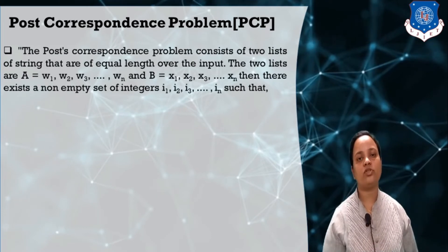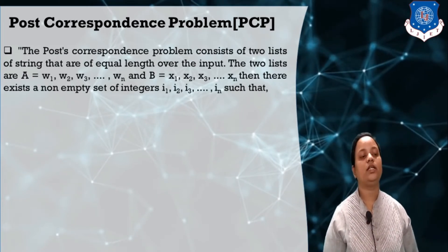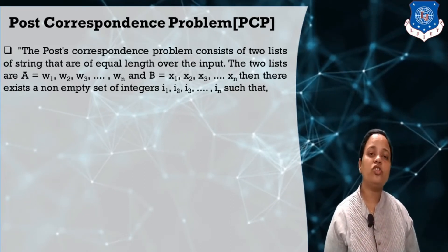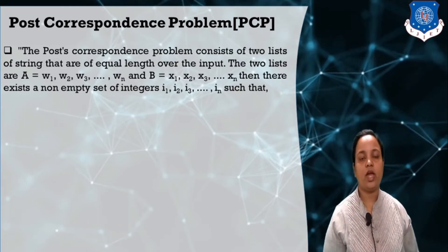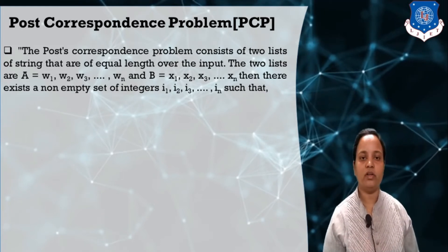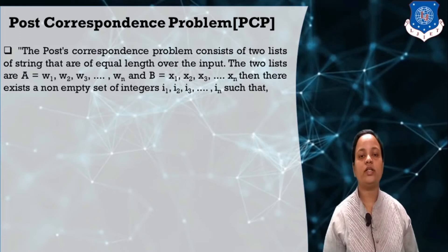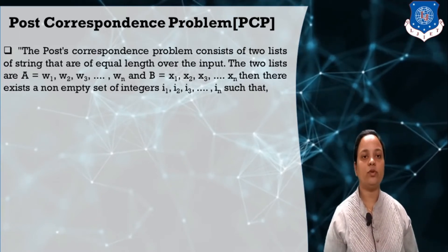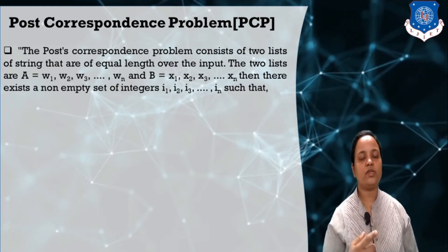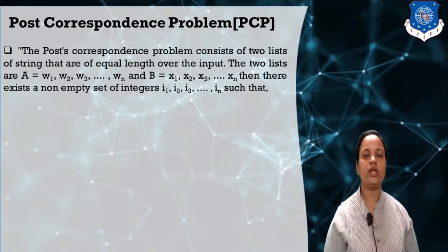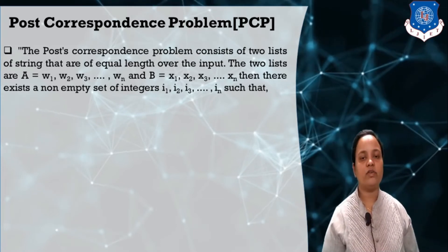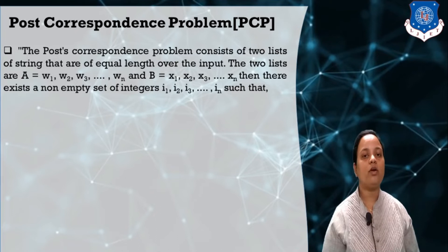A Post Correspondence Problem is an undecidable problem. It consists of two lists of strings that are of equal length over a given input set. These two lists can be represented as A = w1, w2, w3 up to wn, and the next list B = x1, x2, x3 up to xn. There are two lists given which have equal length — the number of strings are equal.